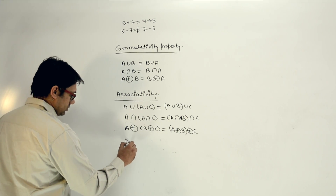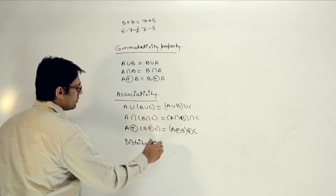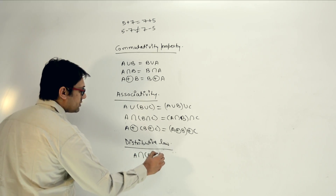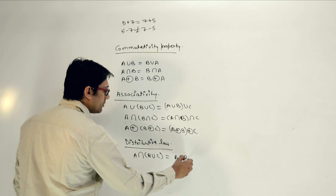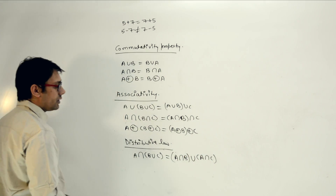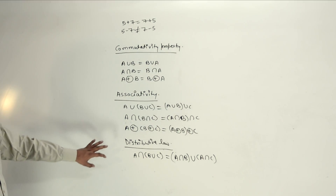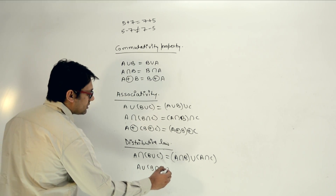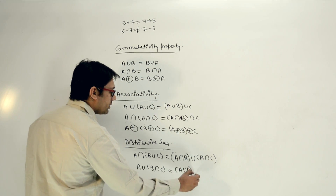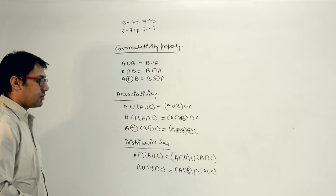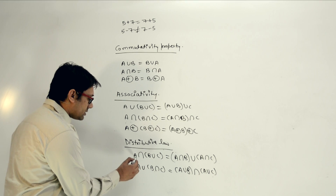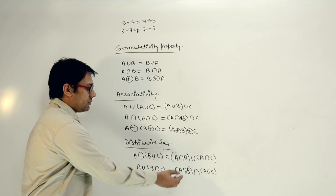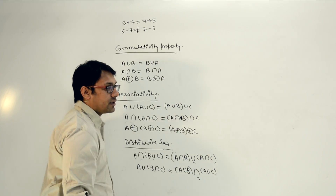The next property is called the distributive law. If you do A intersection (B union C), then it can be written as (A intersection B) union (A intersection C). Similarly, A union (B intersection C) equals (A union B) intersection (A union C). We are distributing A and the operation over B and C. Both the union and intersection operators are valid here.